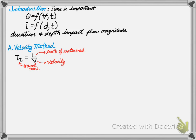The velocity can be calculated using the Manning's equation, where V equals 1.49 divided by n, the hydraulic radius to the two-thirds power, and S to the one-half.